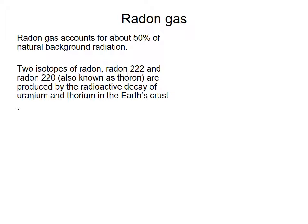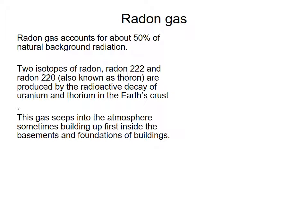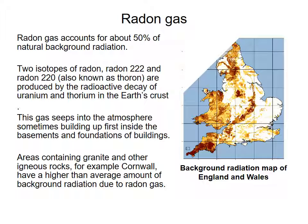And radon gas accounts for about 50% of the natural background radiation. And there's two isotopes of radon. Remembering isotopes means there's more neutrons in one form than the other. So radon-222 and radon-220 are the two that you're looking at. And they are produced by the decay of uranium and thorium in the Earth's crust. And this gas seeps out into the atmosphere and forms in the basement and foundations of buildings. So here's a background radiation map here of the UK, because areas which have high igneous rocks have higher background radiation due to this radon gas.